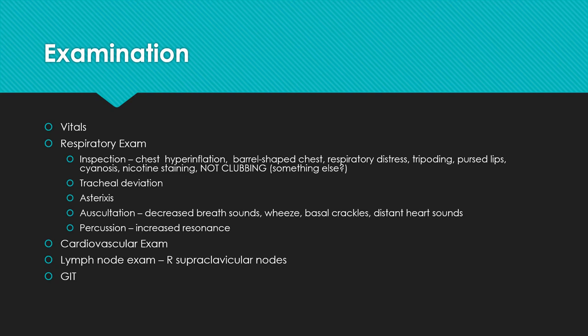Look for deviation of the trachea — is there a pneumothorax? Are they hypercapnic? Look for asterixis. Then auscultate the lungs. In COPD you'll get decreased breath sounds, a global wheeze, and you might hear basal crackles, especially if there's an infective process. You could hear distant heart sounds, especially with chest hyperinflation. On percussion you'll get hyperresonance. As with any patient presenting with shortness of breath, you'll also want a full cardiovascular exam, a lymph node examination — since lung cancer is a differential — and a GIT exam for completeness.